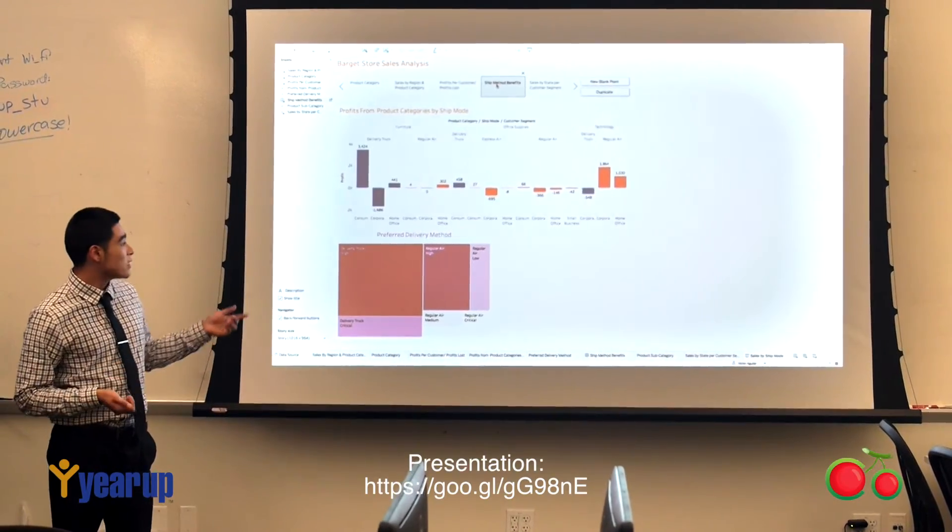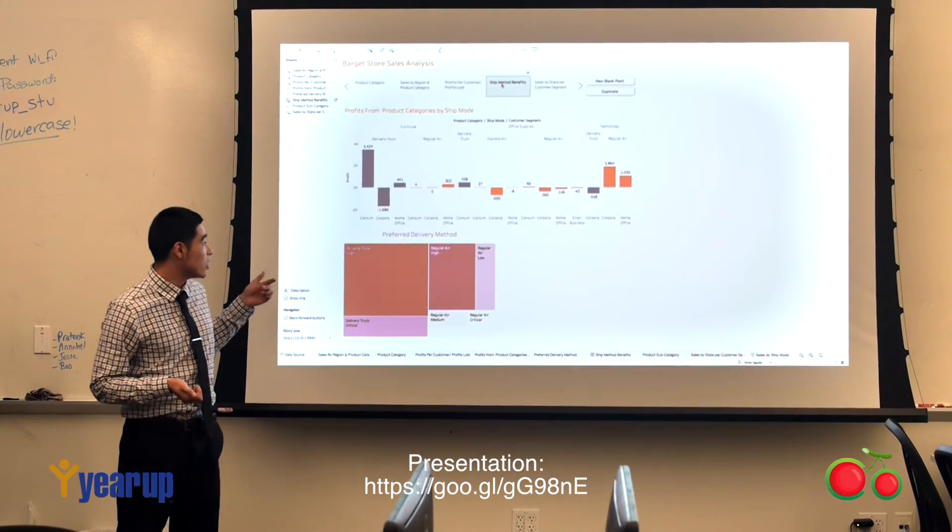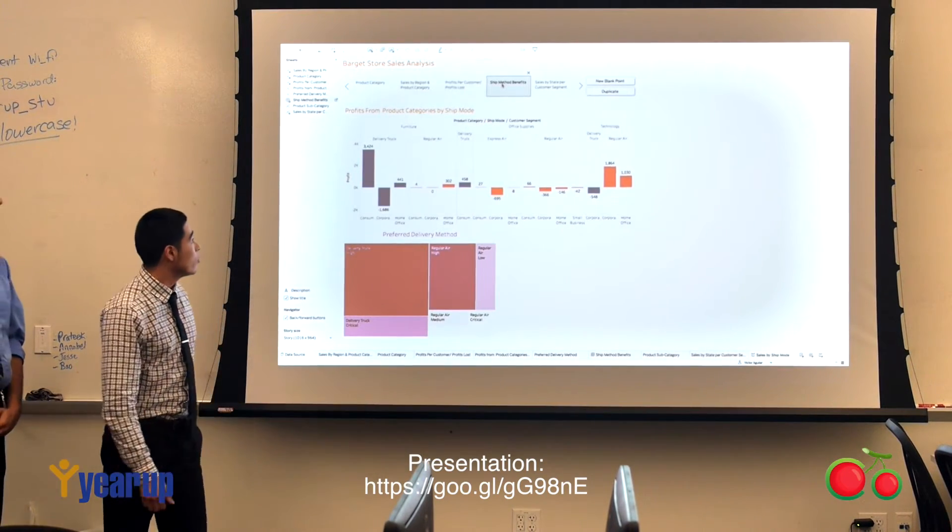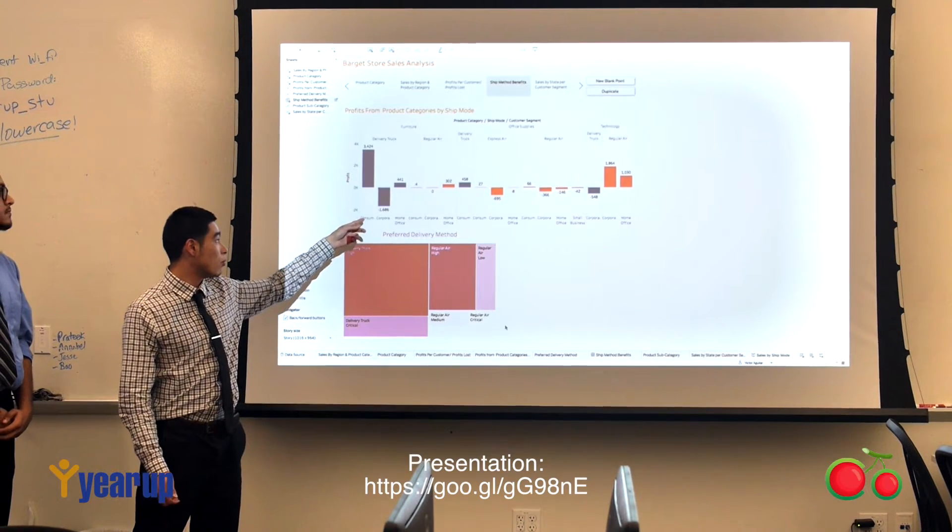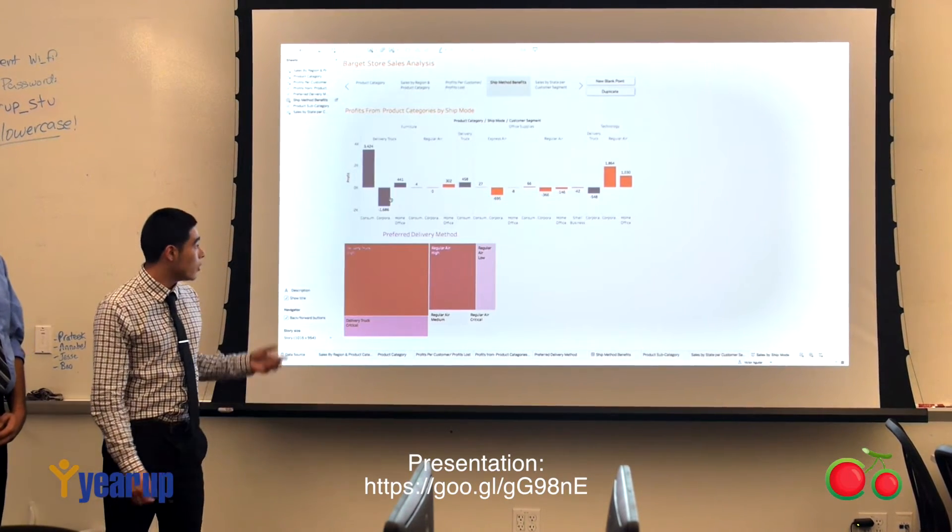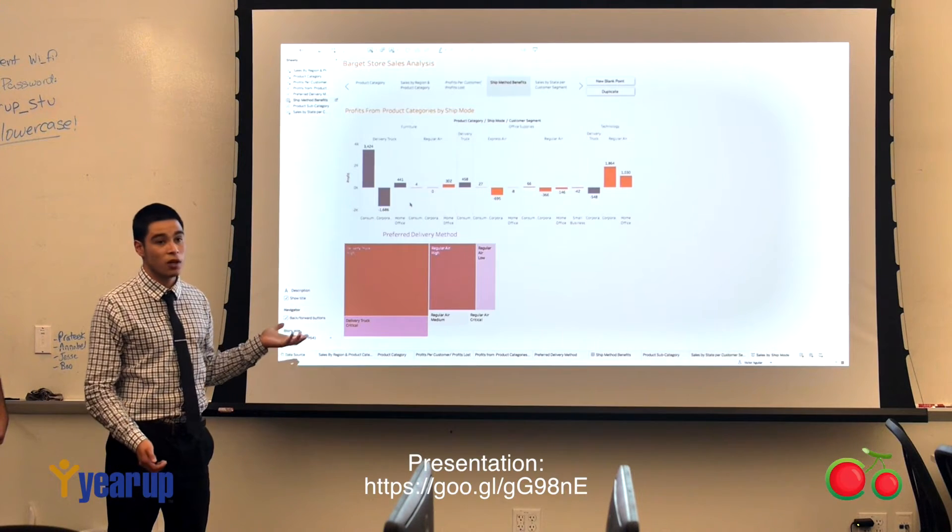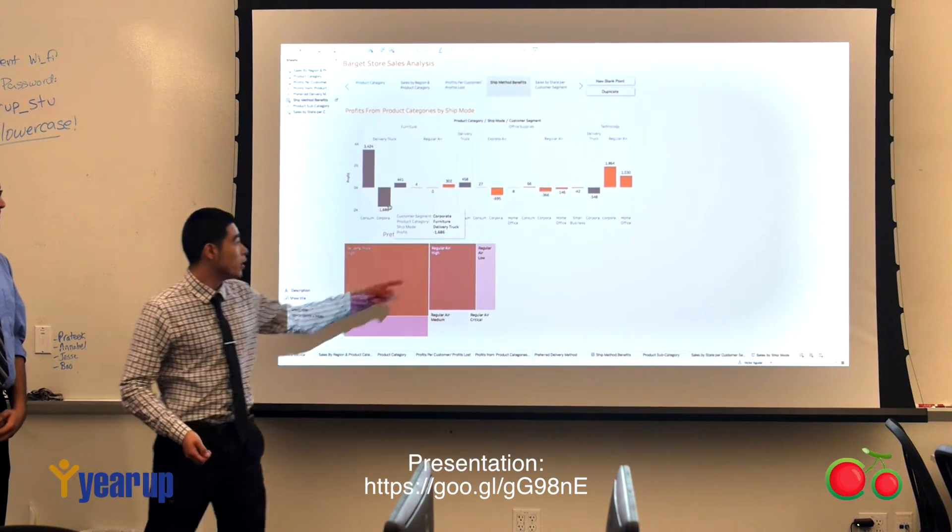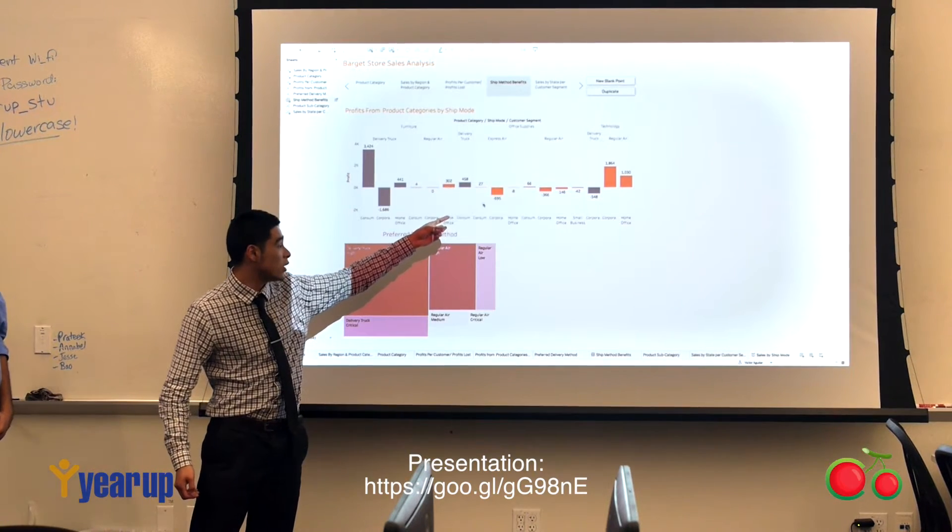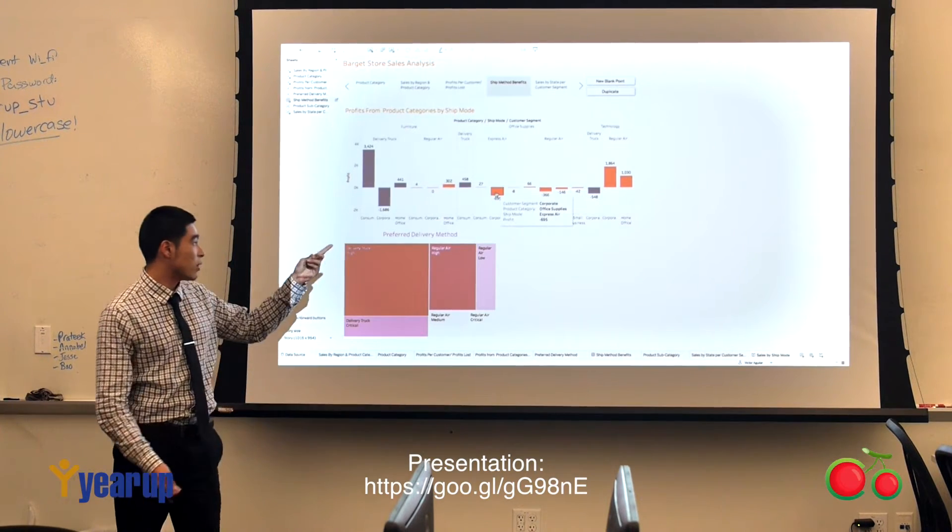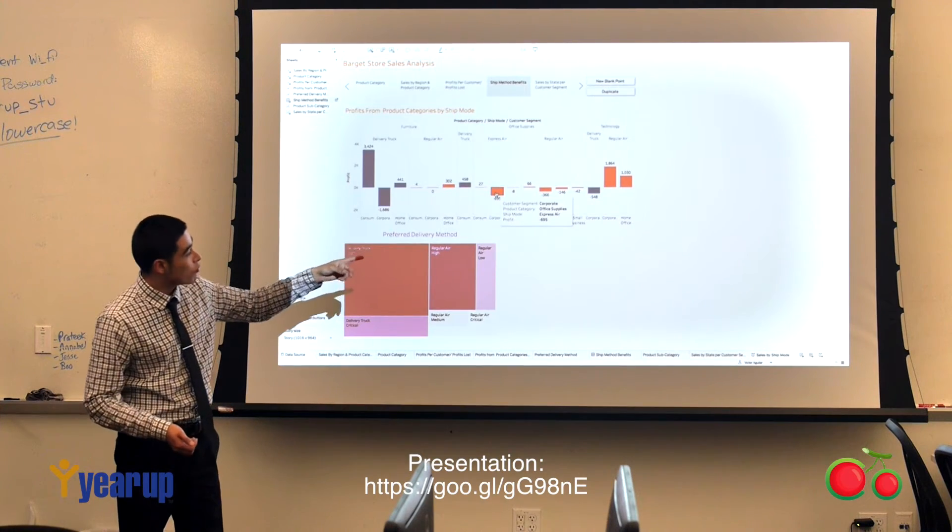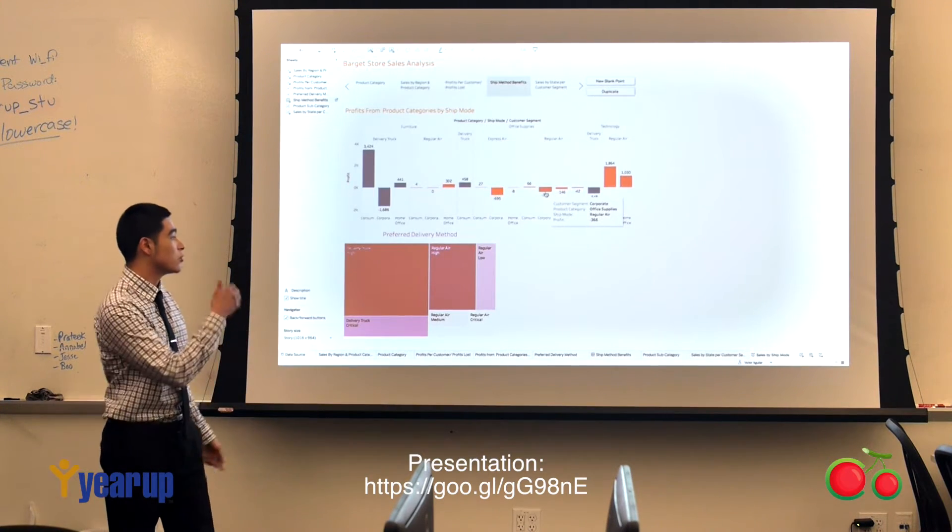From this analysis, we can see that the shipping cost for corporate was a thing that was driving our profits down. In the delivery truck, we were losing almost $2,000 worth of profits just because of our shipping method, and that was from corporate. Corporate was costing us about $700 from Express Air shipping, and then costing us another $366.